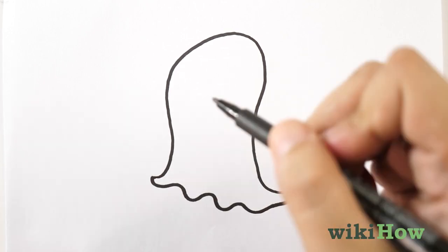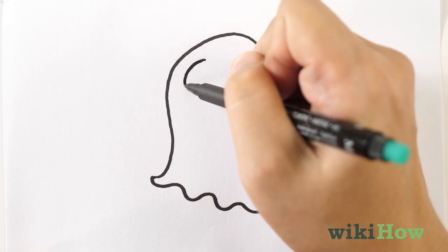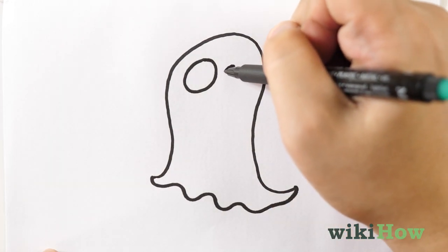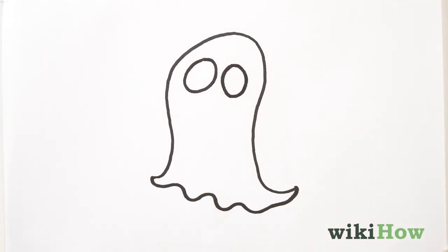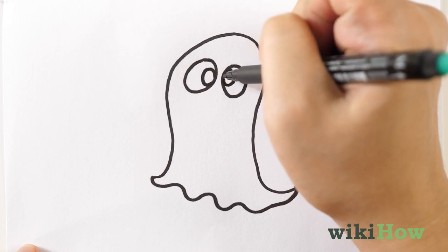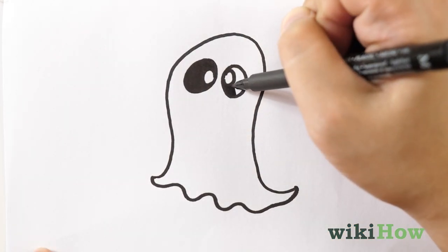Now draw a circle on the top left half of your ghost's body for the first eye, followed by another circle to the right of it for the second eye. Draw two smaller circles inside of each eye, and then shade in the eyes around the small circles.